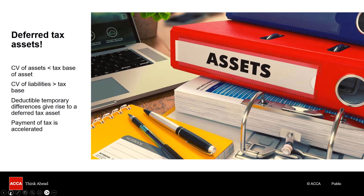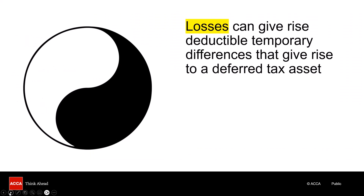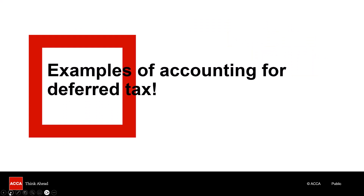To recap: losses give rise to deductible temporary differences that give rise to deferred tax assets. Like 1, 3, and 5 — all odd numbers — these three phrases go together: accounting losses create deductible temporary differences, which give us deferred tax assets. But the most important part is application, application, and application. I want to take you through three deferred tax examples.